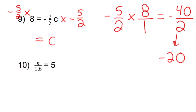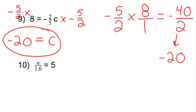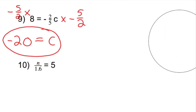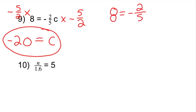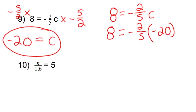So c equals negative 20. Is our answer correct? Let's find out by checking. My original problem is 8 equals negative 2-fifths c. Rewriting with our solution: 8 equals negative 2-fifths times negative 20. Is negative 2-fifths times negative 20 equal to 8? Yes it is — 8 equals 8, and we know our answer is correct.